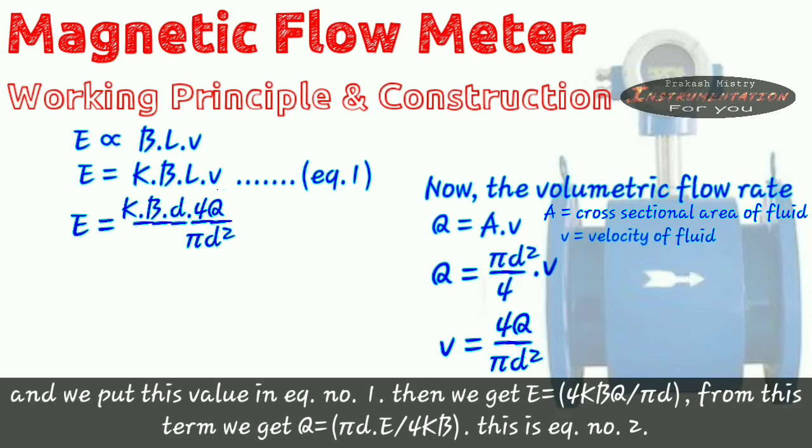Then we get E is equal to 4K BQ by Pi D. And from this term we get Q is equal to Pi D into E by 4KB. This is equation number 2.